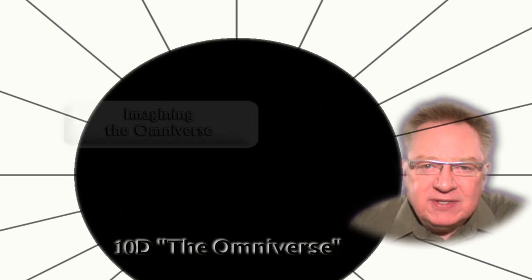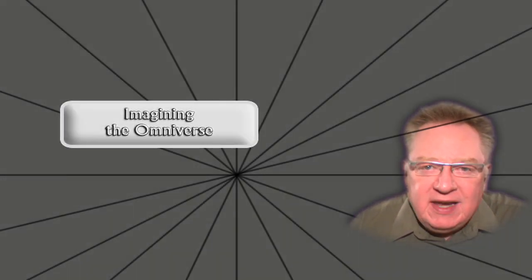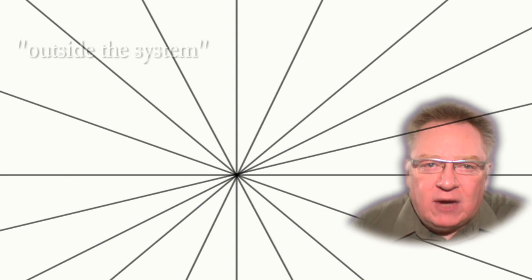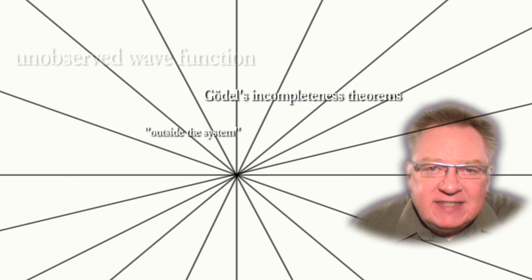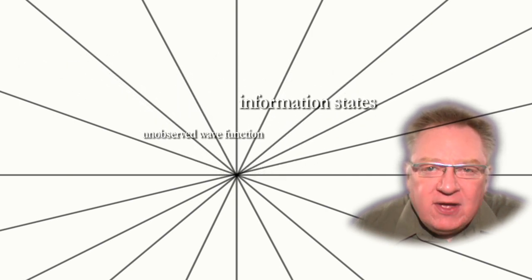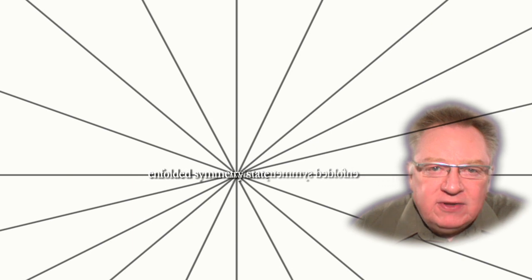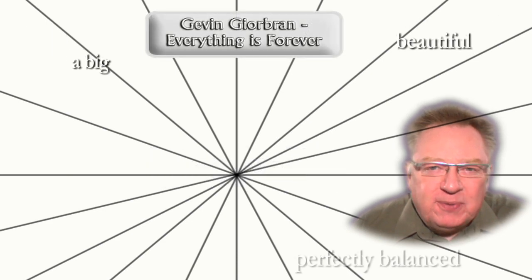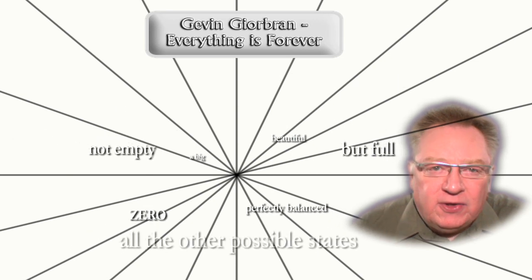Ten. Now you are a point of indeterminate size in the 10th dimension, which some people call the omniverse. As soon as you try to move or observe any aspect of the omniverse, you are spilled back into the dimensions below. In that sense, the 10th dimension is the infinity that all of our other directions were pointing towards, no matter what direction and no matter what dimension we were considering. The 10th dimension, as described in this way of visualizing the dimensions, is outside the system in the sense that Gödel used the phrase — it's the unobserved wave function of all possible information states, all patterns, all universes. It's the enfolded symmetry state that exists both before and after our universe or any other, as physicist Sean Carroll likes to say. And as Gevin Gyorbrand described it, it's also like a big, beautiful, perfectly balanced zero — which is not empty, but full of all the other possible states.